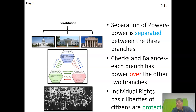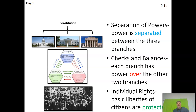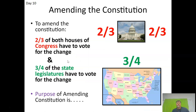Checks and balances — for example, the veto: it's not the president's job to make laws, that's Congress's job, but the president can veto a law, which is a check on the legislative branch. Another example: the Senate must confirm presidential appointments, including appointments to the judicial branch like the Supreme Court. Finally, individual rights — the basic liberties of citizens are protected by the Constitution. Those are the seven key principles.